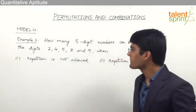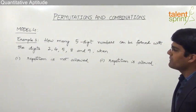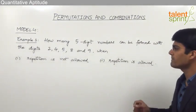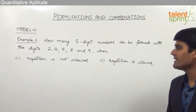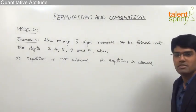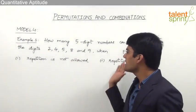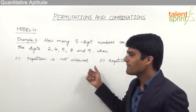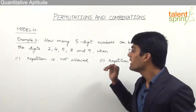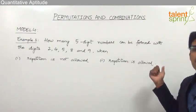Let's look at the first example. How many 5-digit numbers can be formed with the digits 2, 4, 5, 8 and 9 when: the first part says repetition is not allowed, and the second part says repetition is allowed. So here we are going to see what is the difference in these two cases.